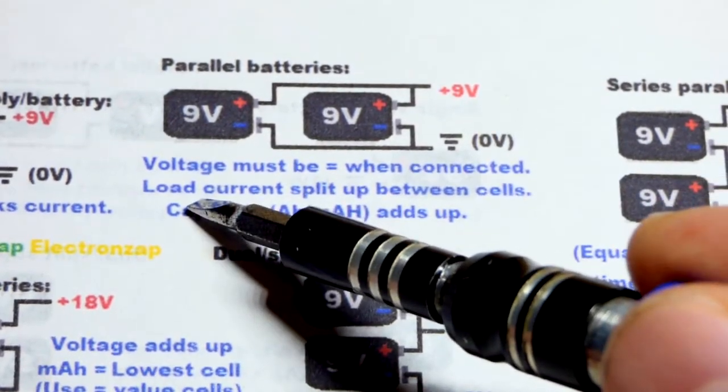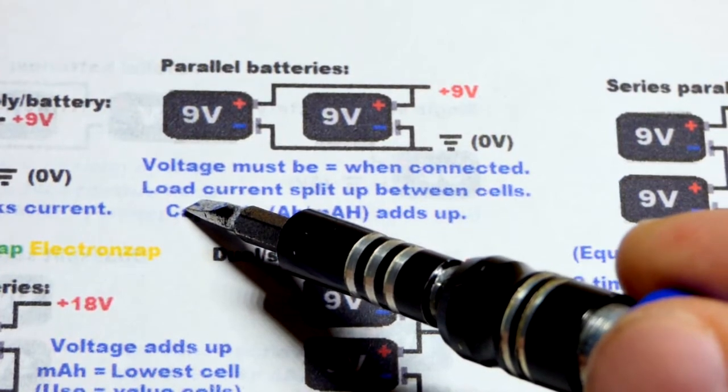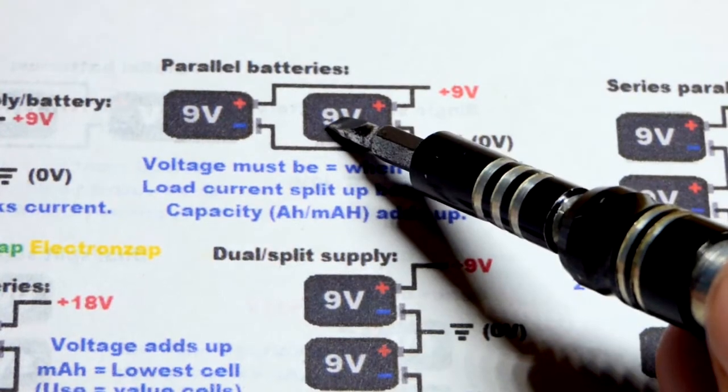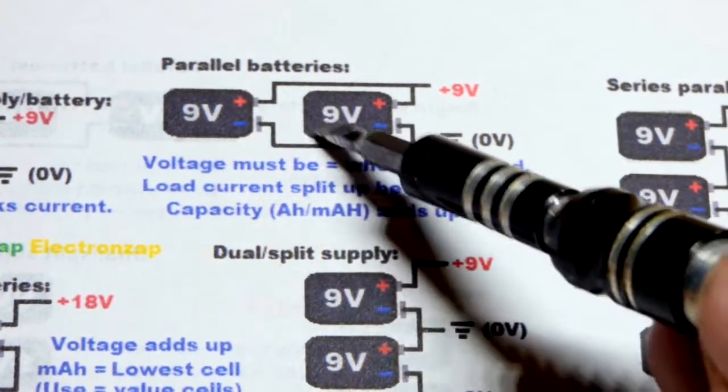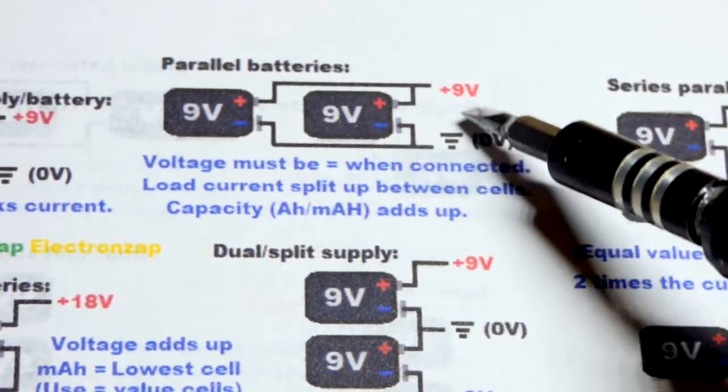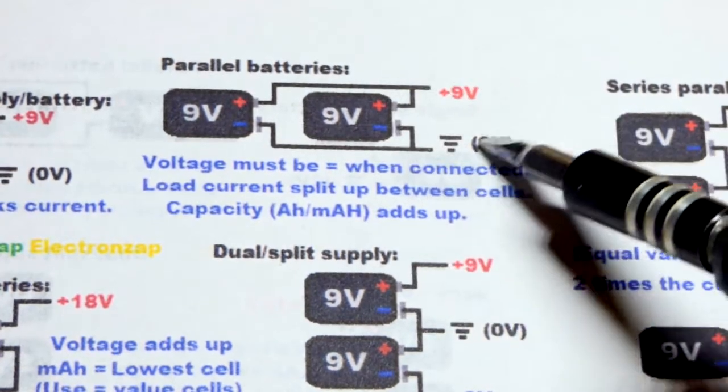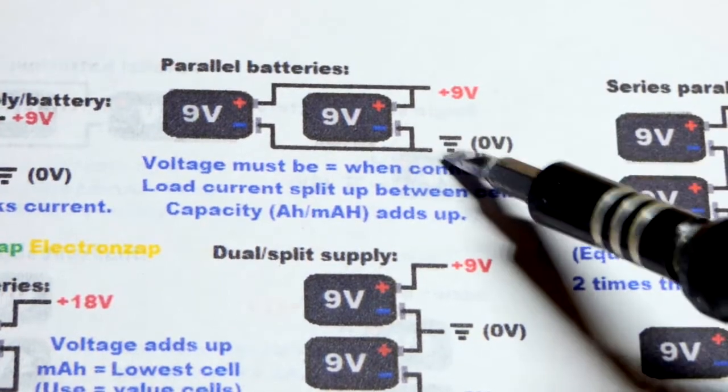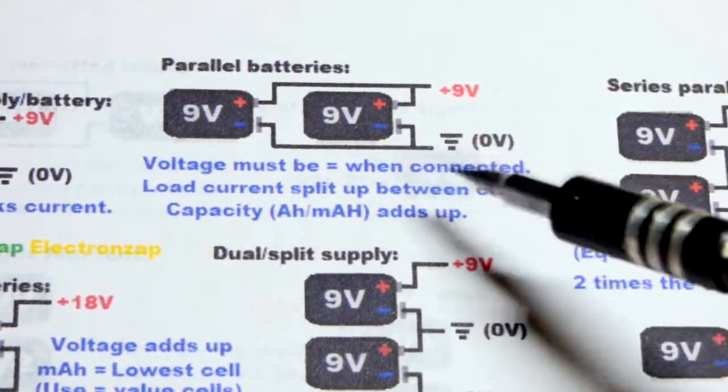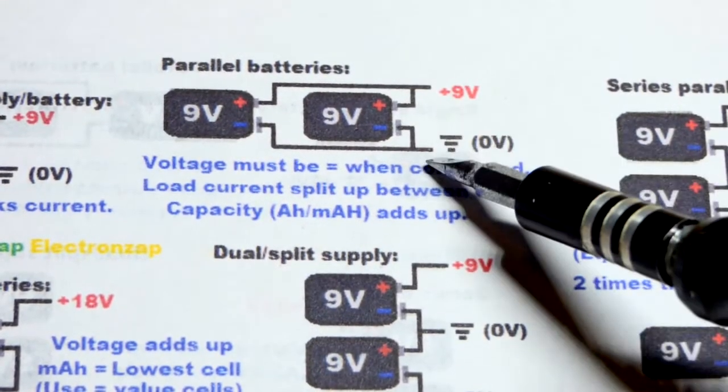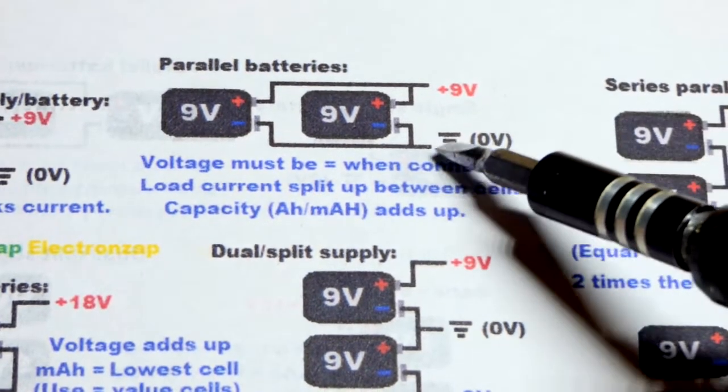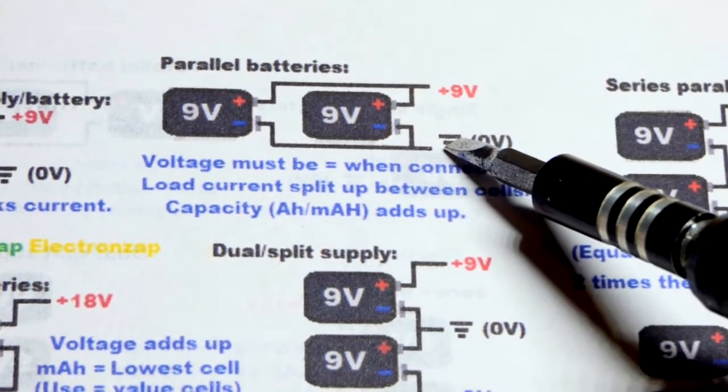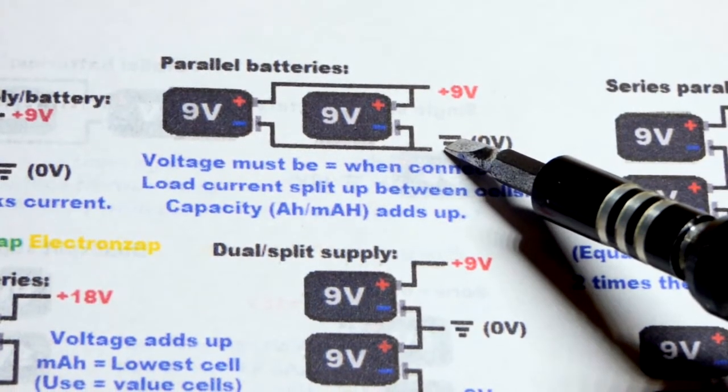But the benefit to this now is that whatever current the load use, some of it will come from one battery, some of it will come from the other. If they're completely equal batteries, it will be an equal amount of current from each one of them that they are providing for the load, at the voltage of each one of them. And so only 9 volts now, instead of 18, even though there's two batteries. But it can provide current for twice as long. So the same circuit will last twice as long before power runs out.